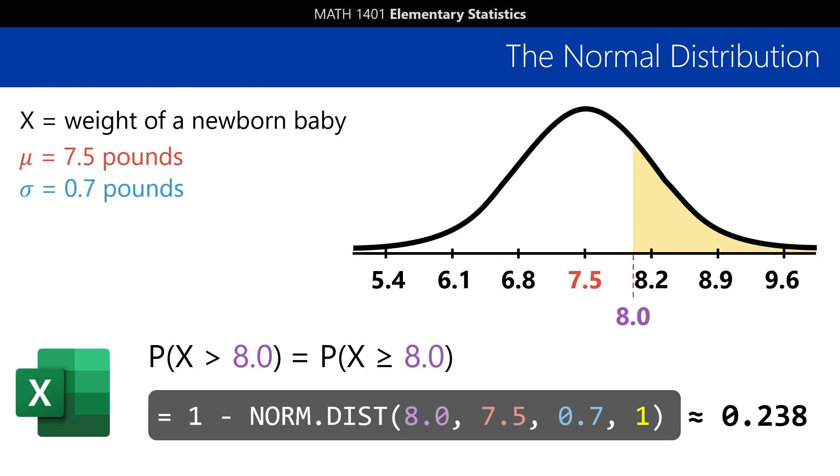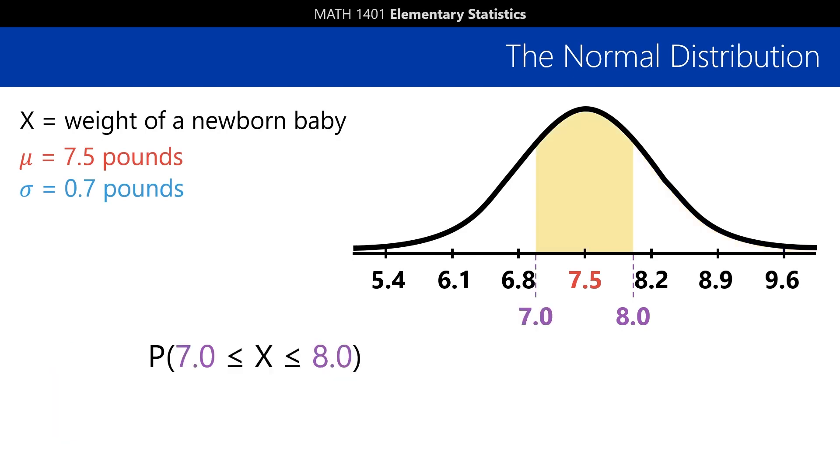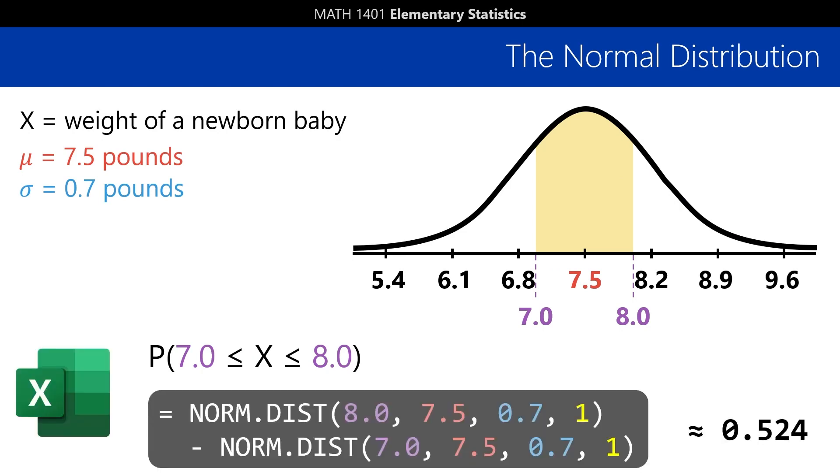What if we want the probability that a newborn's weight falls between two values, say, 7 pounds and 8 pounds? Well, we can find that by starting off with the cumulative probability for up to 8 pounds, and then taking away the cumulative probability for up to 7 pounds. What's left will be the area between those two values, which is exactly the probability we're looking for, about 52.4%.